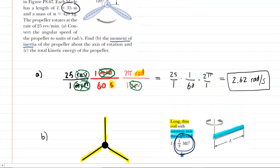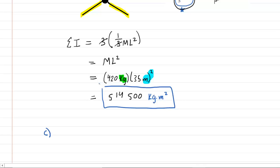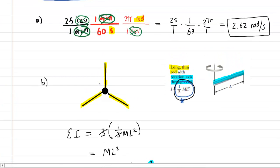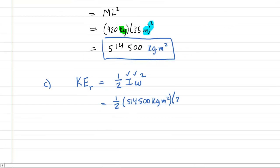We can now answer part C, which wants the total kinetic energy of the propeller. For a rotating object — one that is spinning around its axis — the rotational kinetic energy is equal to one-half times the moment of inertia times the angular speed squared. We've already found the moment of inertia in part B and the angular speed in part A, so we simply plug these values in. The moment of inertia is 514,500 kg·m² and the angular speed is 2.62 radians per second, which we square.